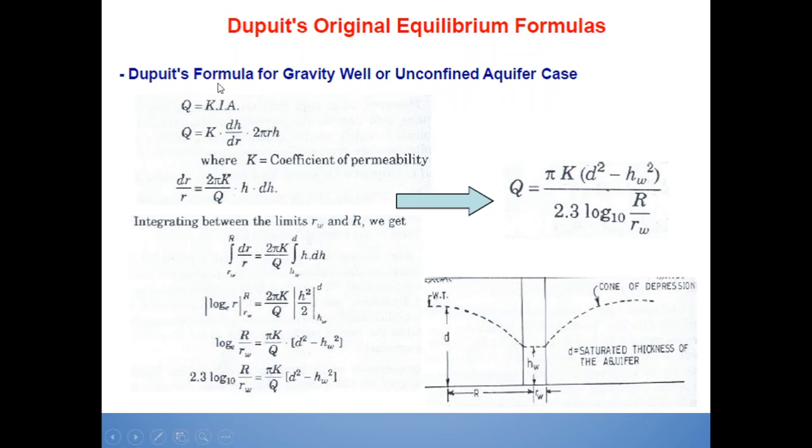If you see the Dupuit's formula for gravity well or unconfined aquifer case, Q is equal to KIA, Q is equal to K(dh/dr)(2πrh). Already this part we have discussed, where K is the coefficient of permeability. So dr/r is equal to (2πK/Q)h dh. Integrating between the limits, for Dupuit, you will consider the limits rw and R, where rw is the radius of the main well and capital R is the radius of influence.